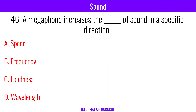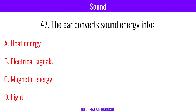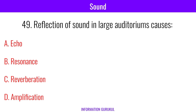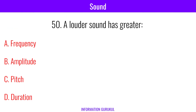A megaphone increases the loudness of sound in a specific direction. The ear converts sound energy into electrical signals. Which part of the human ear helps maintain balance? Semicircular canals. Reflection of sound in large auditoriums causes reverberation. A louder sound has greater amplitude.